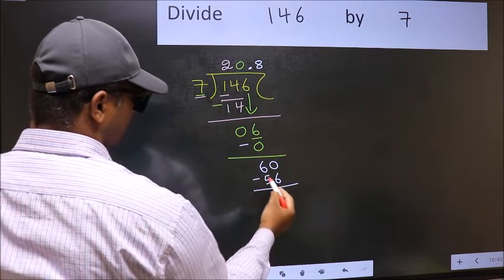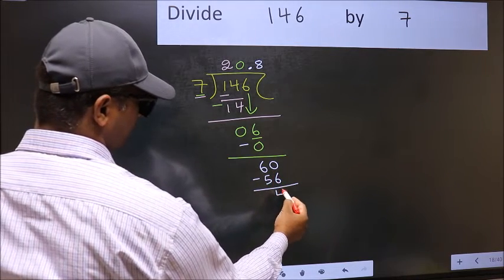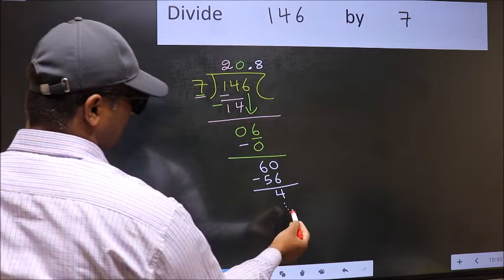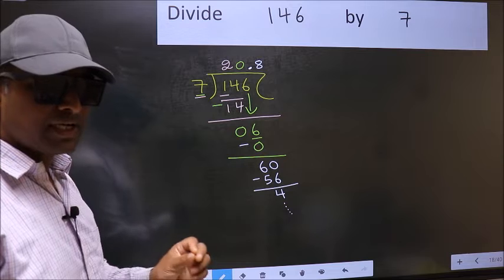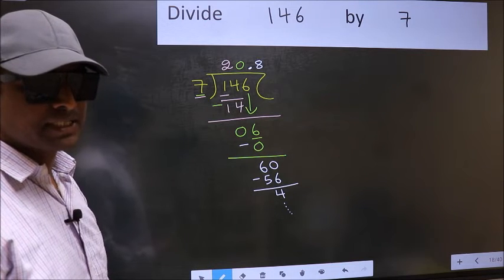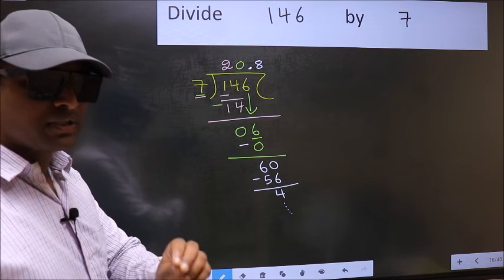Now you should subtract: 60 minus 56 equals 4, and continue the division. I am not doing that. Did you understand where the mistake happens? You should not make that mistake.